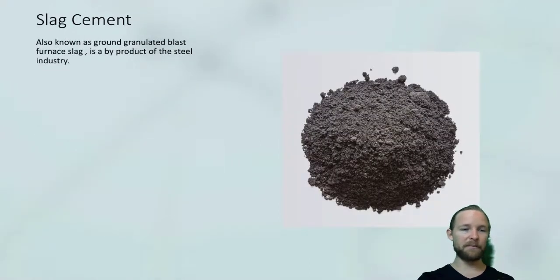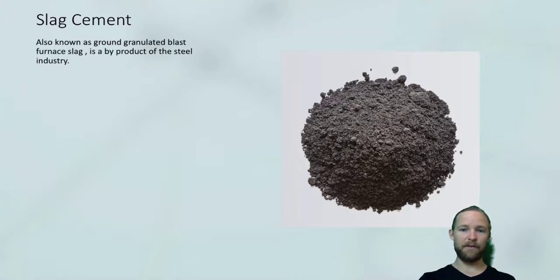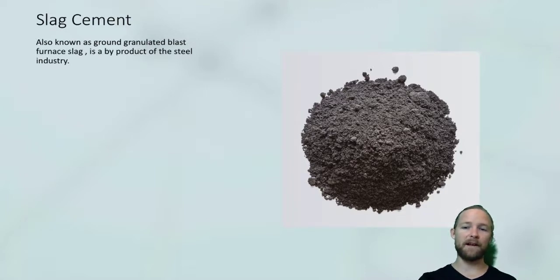The next material is slag cement, also known as ground granulated blast furnace slag, and this is a product of the steel industry. It is a hydraulic cement formed during the liquefaction of iron in the blast furnace. The molten slag that comes out is then rapidly cooled, and it forms glassy, non-metallic granules.